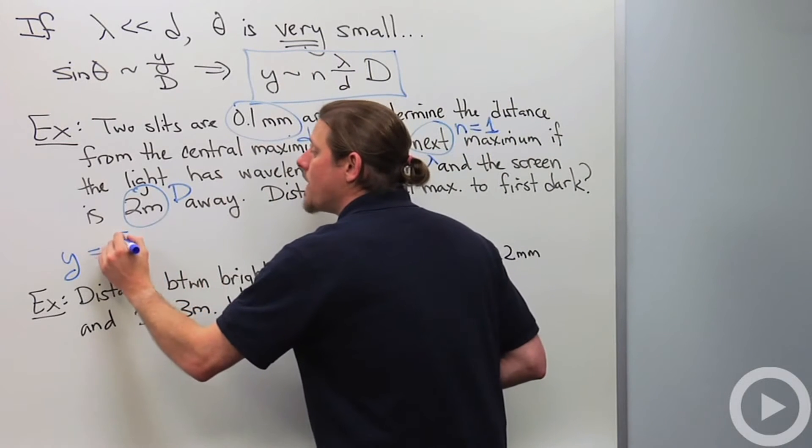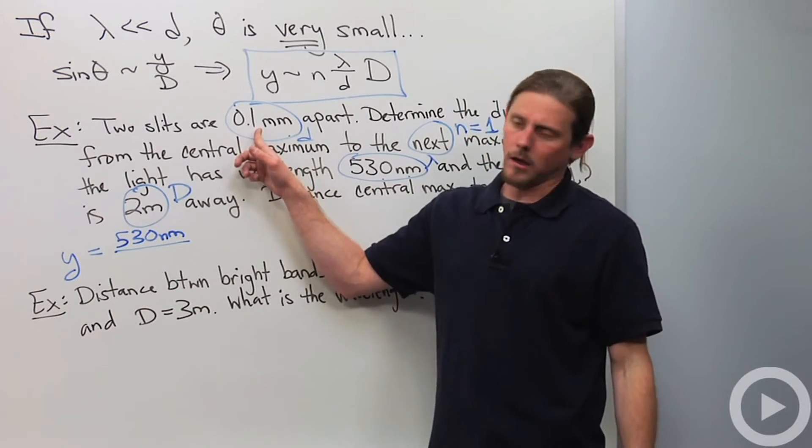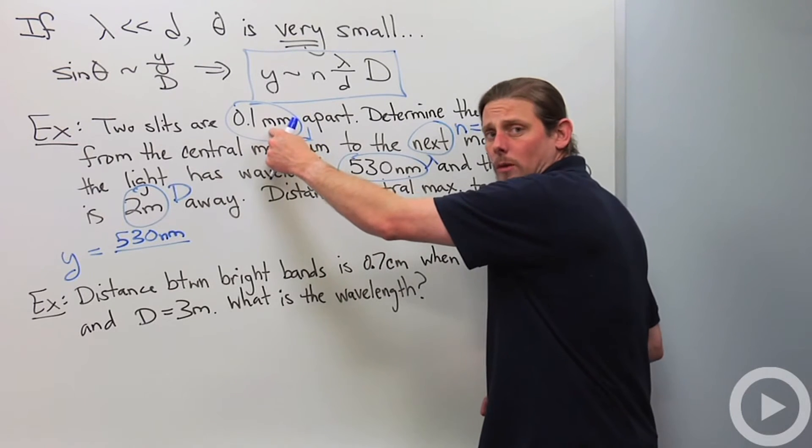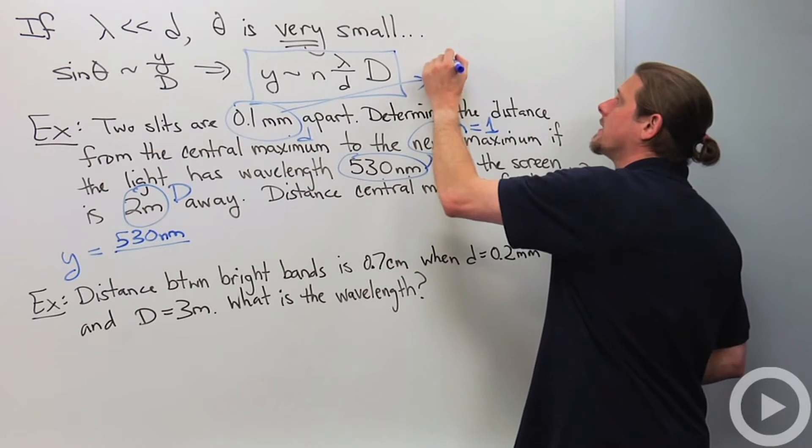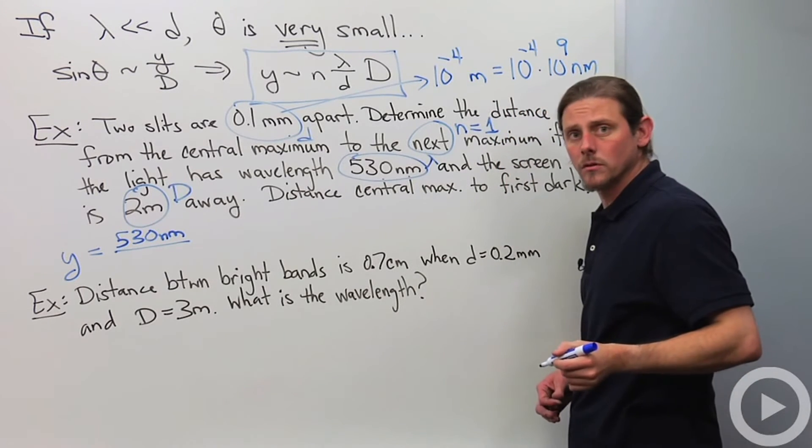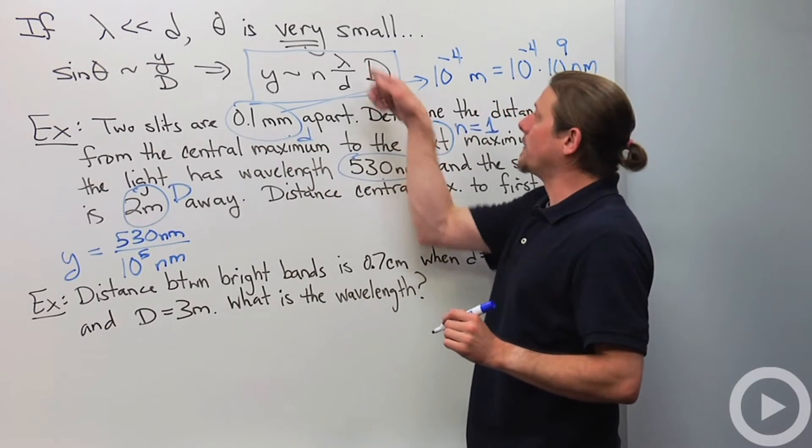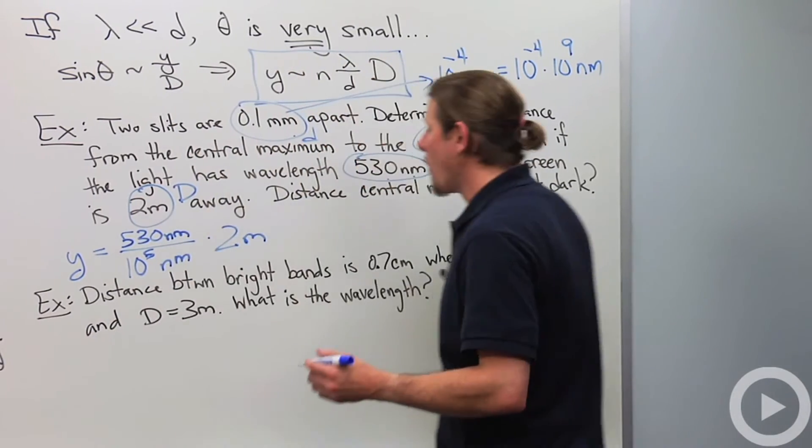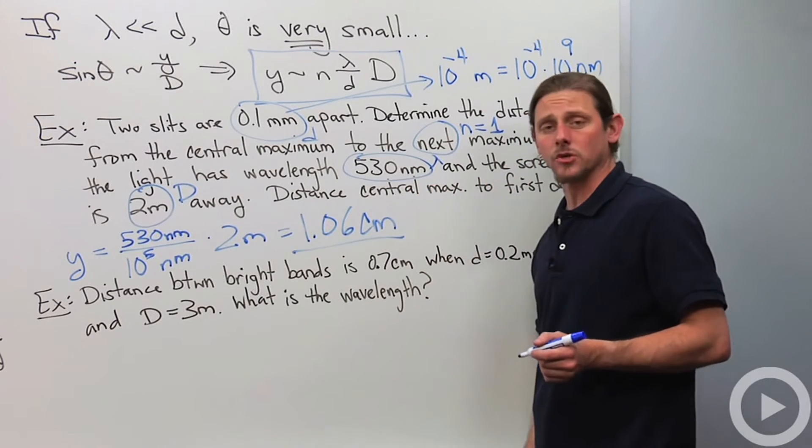We've got one and then it's 530 nanometers divided by - now this distance d is 0.1 millimeters, but I've got nanometers up here. So let's try to fix that. What we're going to do is we're going to express this first in terms of meters and then we'll express it in terms of nanometers. So this is 0.1 millimeters, so it's 10 to the minus 4 meters. So that's 10 to the minus 4, 10 to the 9 nanometers. So it's 10 to the 9 minus 4 is 5 nanometers. So that's lambda over d and then we got times 2 meters. And if you go through this analysis, what you'll find is that it's 1.06 centimeters to the next maximum from the central maximum.